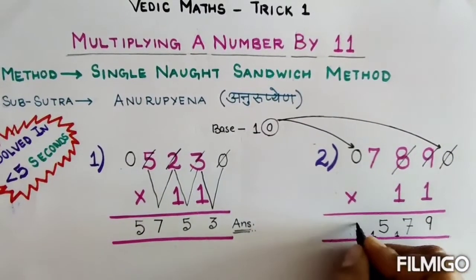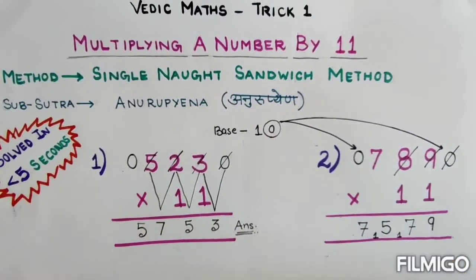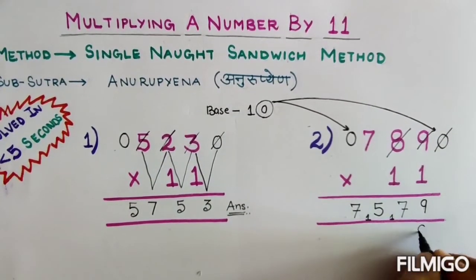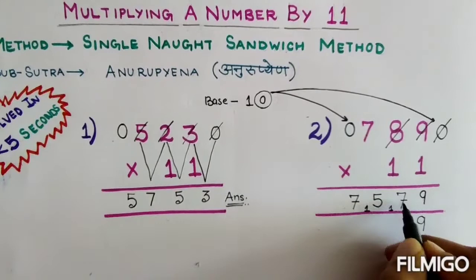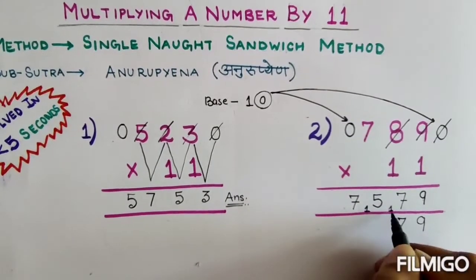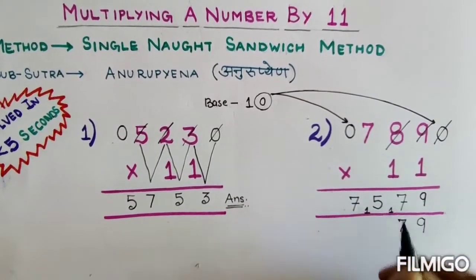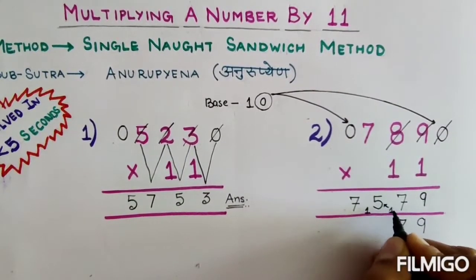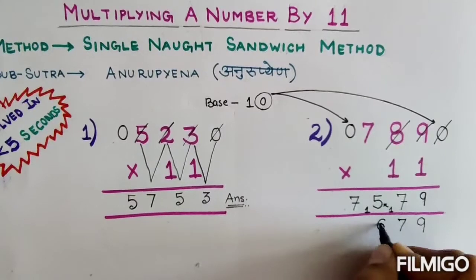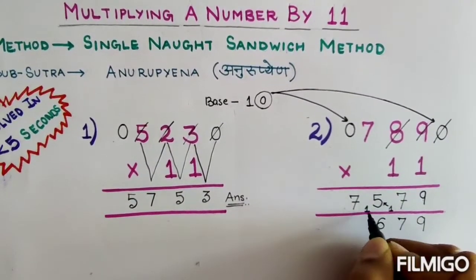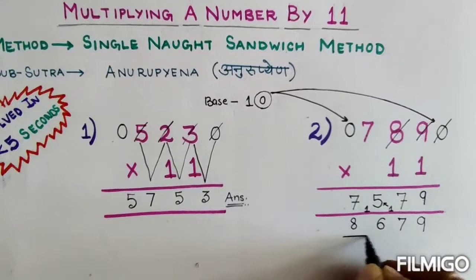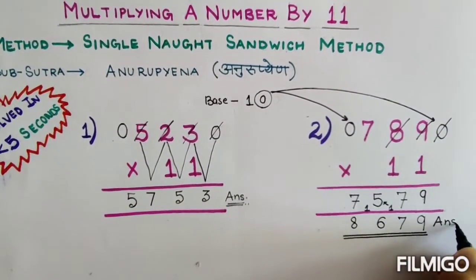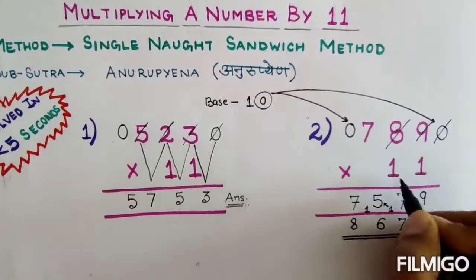7 plus 0 is 7. Now to balance my answer, I will write 9 here, 7 here, and for this 1 it will go here. So 5 plus 1 will become 6. Then 1 plus 7 is equal to 8. This is my answer on multiplying 789 by 11.